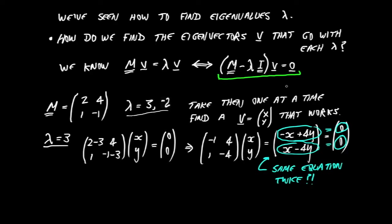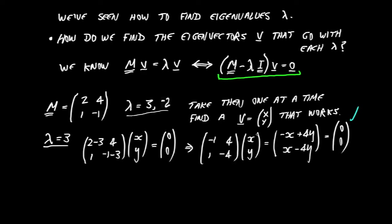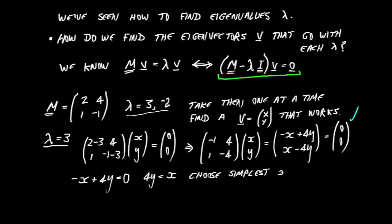That's telling us the same thing. Is that a problem? No — that's exactly what we want to see at this stage. We should find that for a 2x2 matrix, only one of these rows in the final expression constrains us, and the other doesn't add any new constraint. We're saying minus x plus 4y equals 0, which rearranges to 4y equals x. We can choose the simplest values of x and y. I'll choose y equals 1, giving x equals 4.